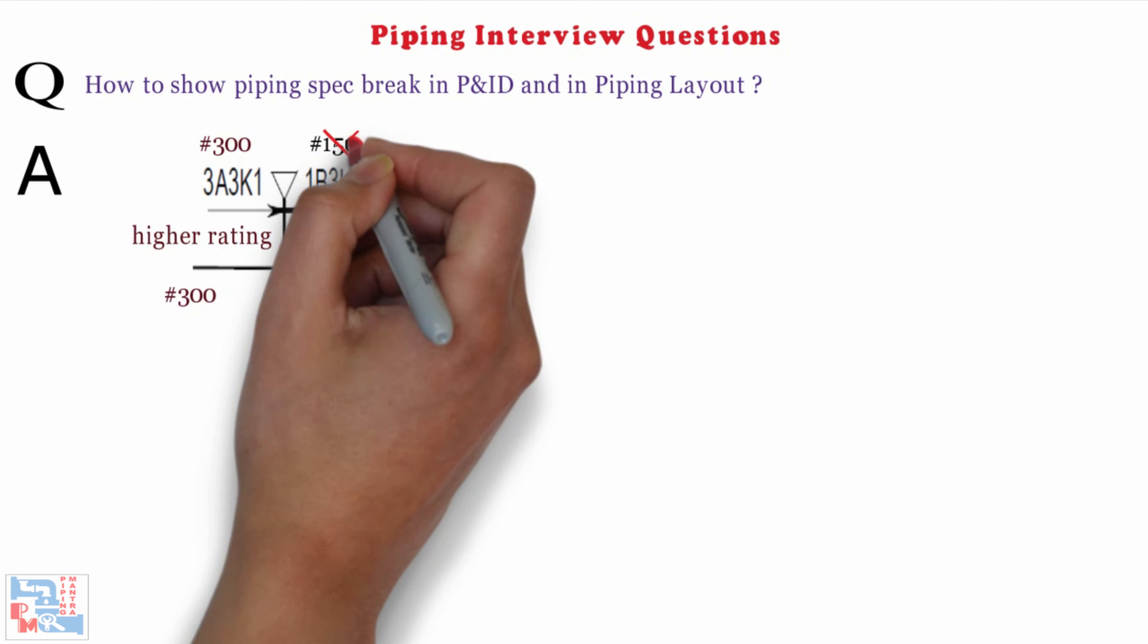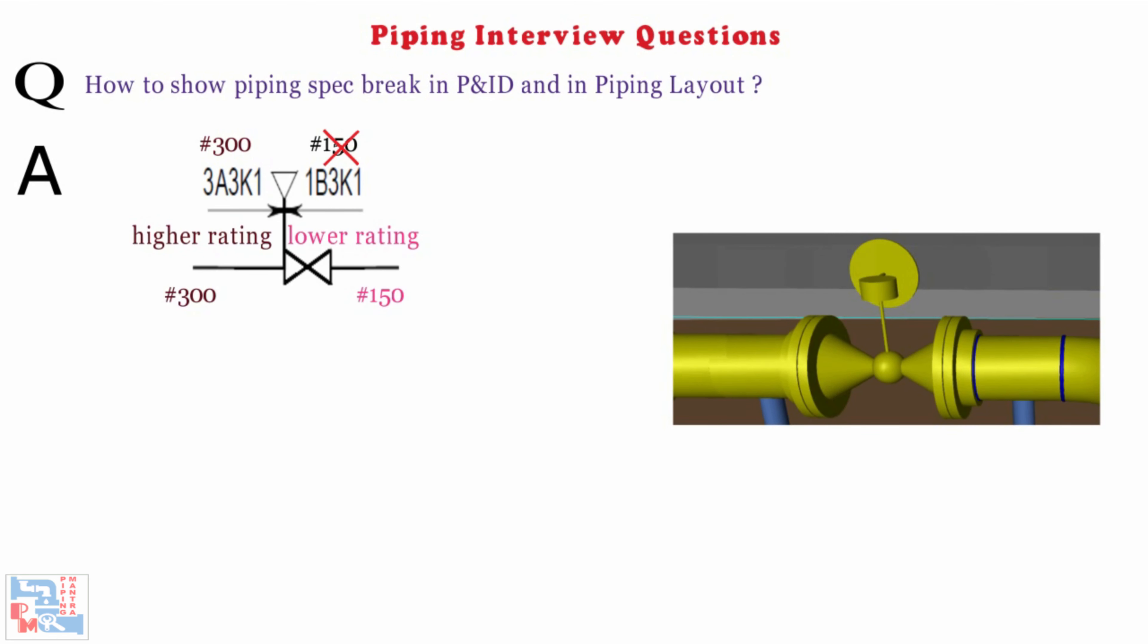However, this is not the case. Let's see how we route this. Till this flange, we will follow the spec 3A3K1 and flange of same spec that is in 300 rating. And after that, we have new spec starting from the valve that is 1P3K1, that is in 150 rating.